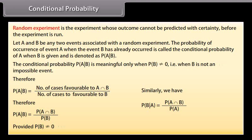Therefore, P(A|B) = P(A ∩ B) / P(B), provided P(B) is not equal to zero. Similarly, P(B|A) = P(A ∩ B) / P(A), provided P(A) is not equal to zero.